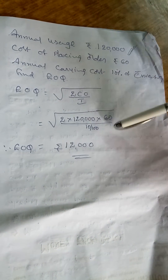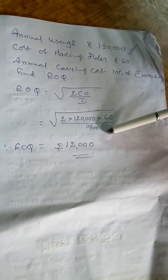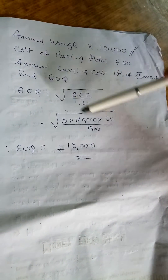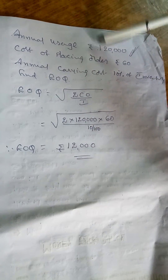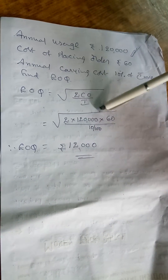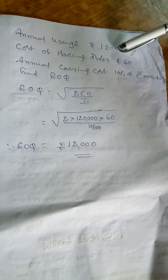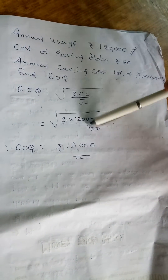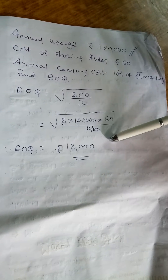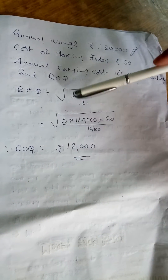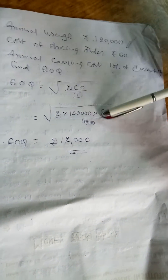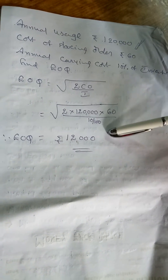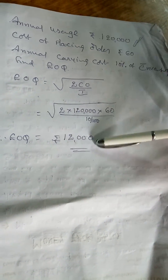So, if they give a percentage, that percentage directly we will put in the denominator. 10% means 10 by 100. So, 2 into rupees — annual consumption 1,20,000 — into cost of placing order, specified clearly as 60, by 10%, that is 10 by 100. Now simplify clearly: under root 2 into 1,20,000 into 60 into 100 by 10. That is equal to 12,000 rupees.